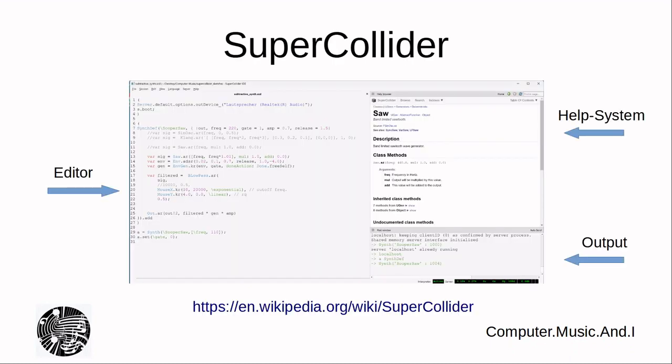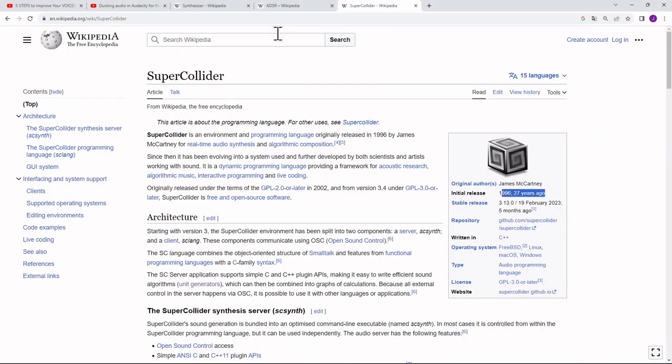SuperCollider is a computer music system, and it's relatively old. Actually, as you can see here in the Wikipedia article on SuperCollider, it has been developed by James McCartney in 1996. Therefore, it's already 27 years old, which is very old for a computer music system.